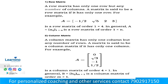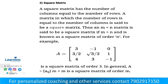A column matrix has only one column but any number of rows. A matrix is said to be a column matrix if it has only one column. The next one is square matrix — a square matrix has the number of columns equal to the number of rows.